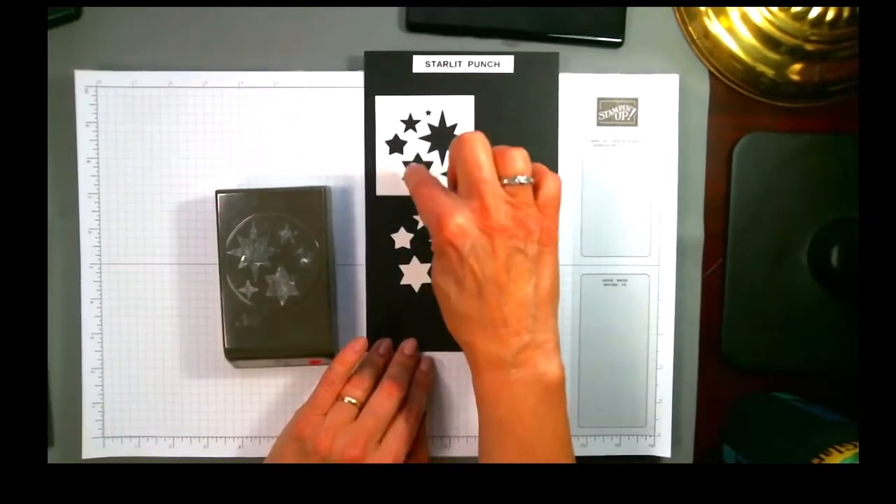I've punched a sample page and on the sample page here you can see the stars that it actually punches out and then I wanted to show you the configuration of what's left behind for the holes because many times we make a project where it's actually the hole that we want not the piece that's come out of the hole. So you could put a piece of designer paper or gold foil or something else behind the holes and let it show through.